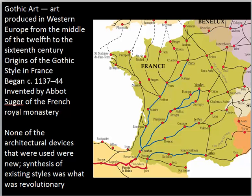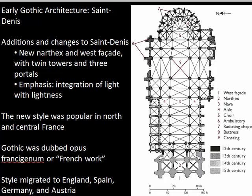Building upon what we've seen in the progression from the Romanesque chapter, we can see a lot of interesting developments in the strengthening language of Christian art. We're going to focus on France, because it is France where we see the greatest concentration of Gothic cathedrals. While we don't really discover new things, what we can see is innovation and refinement of existing techniques and elements in their work.